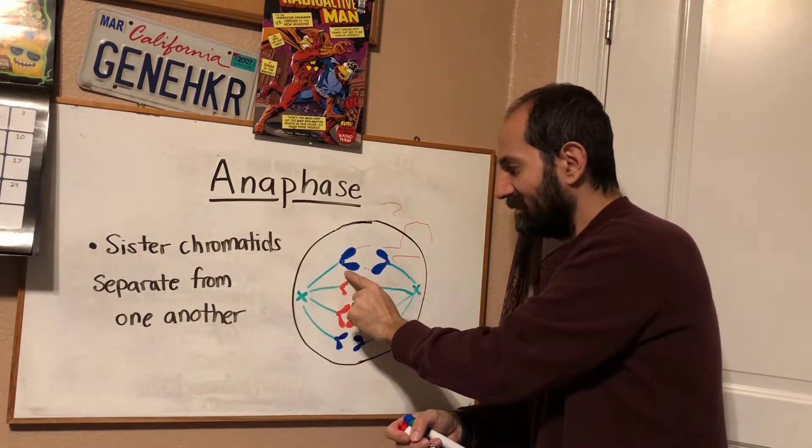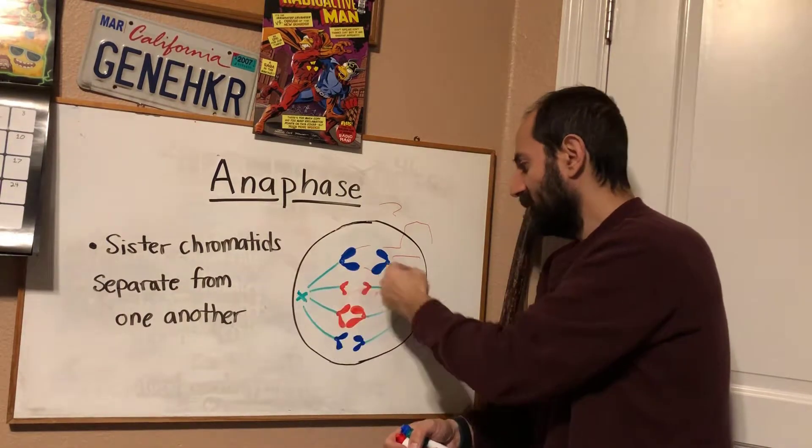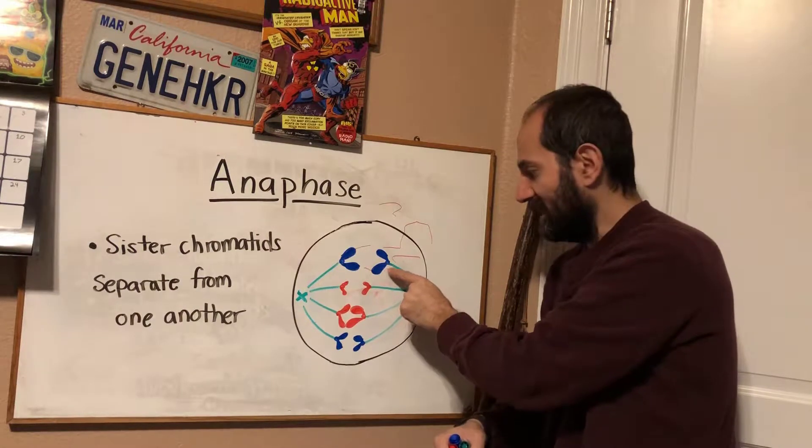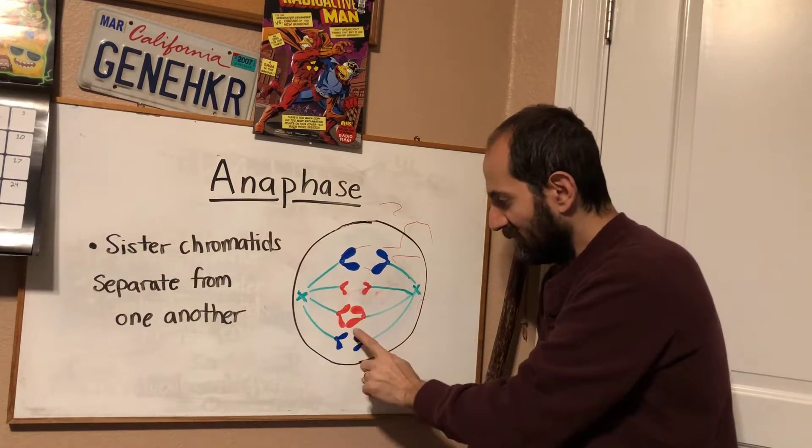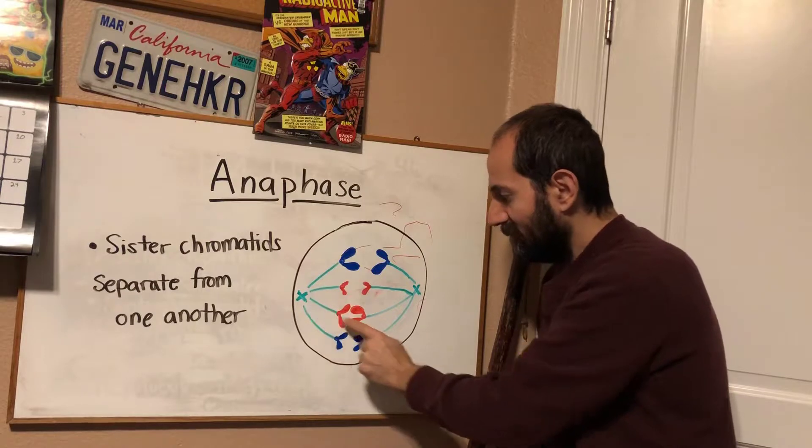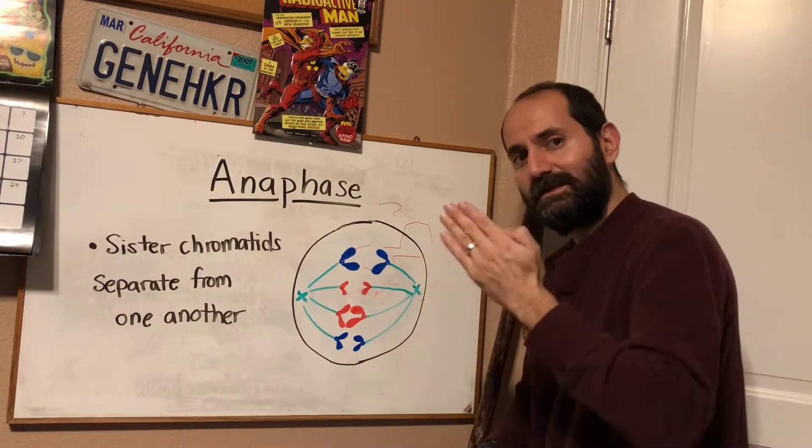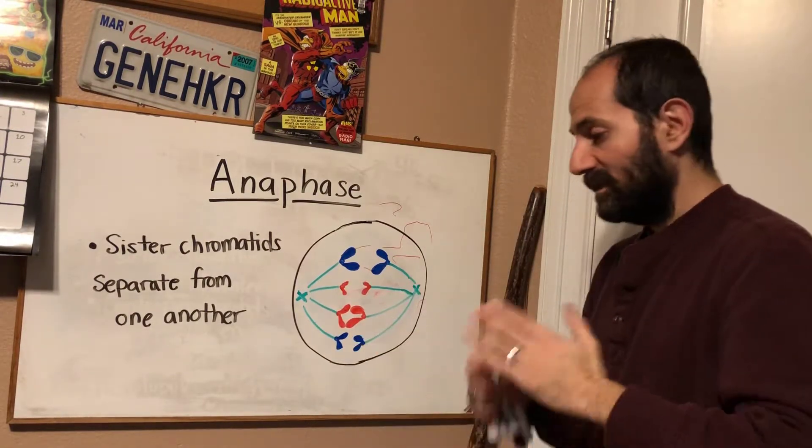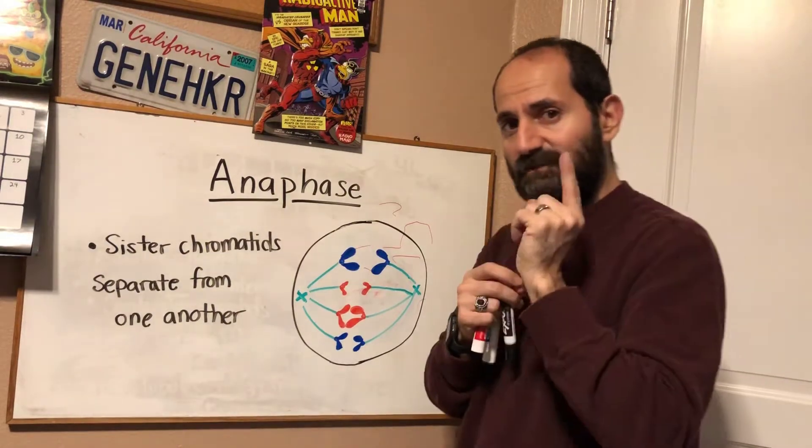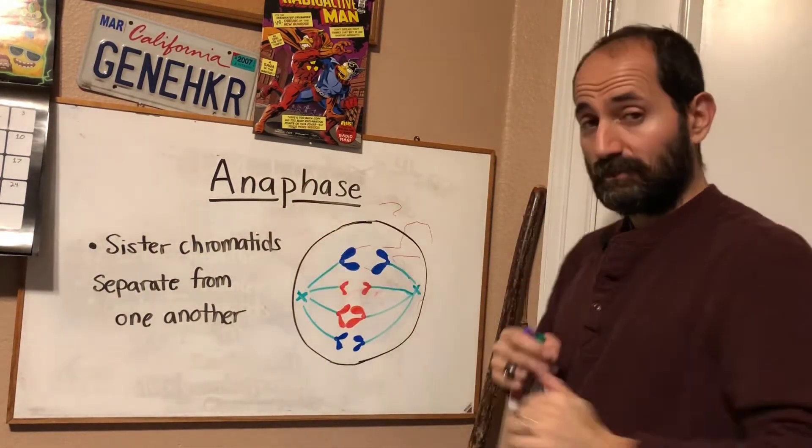So this cell is getting a dad's chromosome 1. The other cell is also getting an exact same copy of dad's chromosome 1. This cell is getting mom's chromosome 1. The other cell is getting an exact copy of mom's chromosome 1. So whatever genetic information is headed one way is also headed the other way.